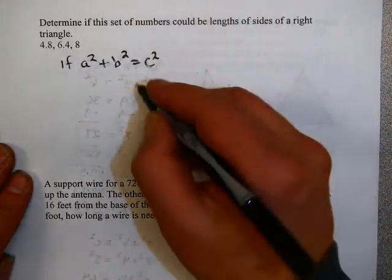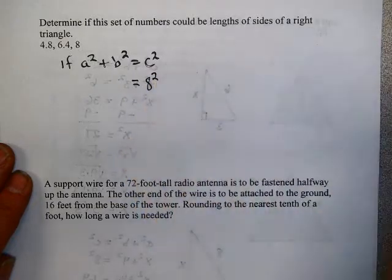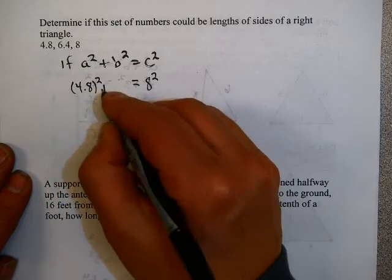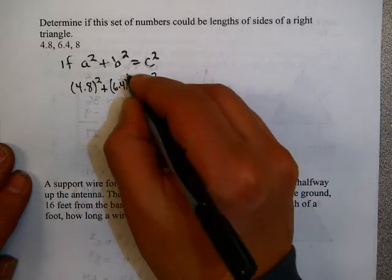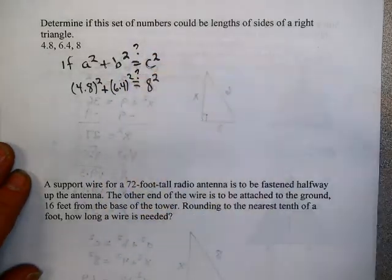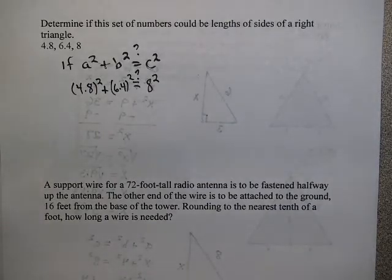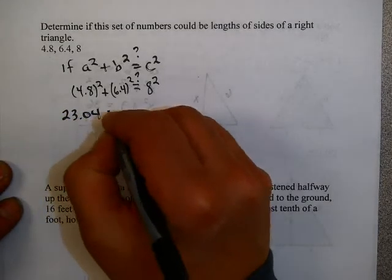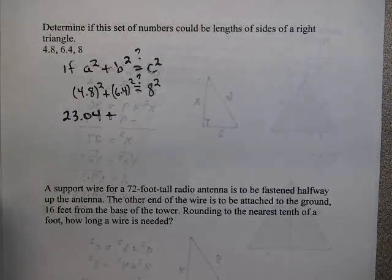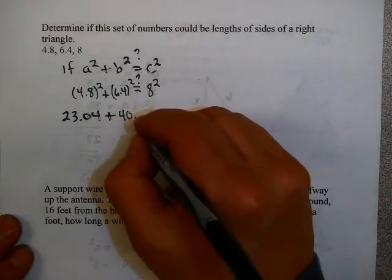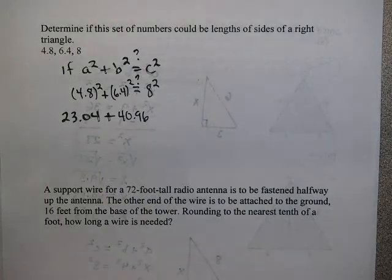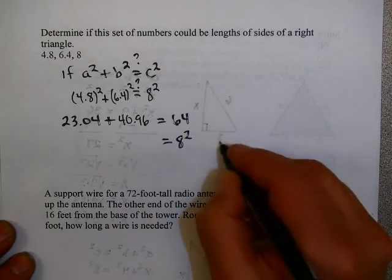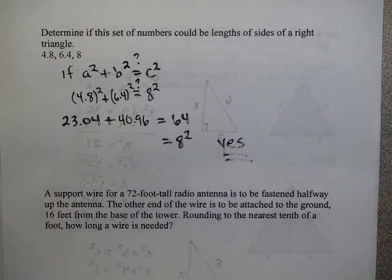So if you look at these three numbers, clearly the longest side is 8. What's a and b is irrelevant. It doesn't matter which one you make a and b. They're just added together on the same side of the equation. So now let's see if this is true. 4.8 squared, if I use my calculator, gives me 23.04. 6.4 squared gives me 40.96. If I add those two together, I get the sum 64, which, by the way, equals 8 squared. So the answer here is yes. This is a right triangle.